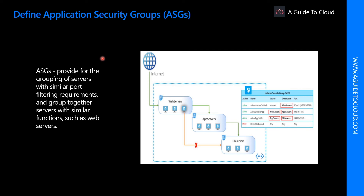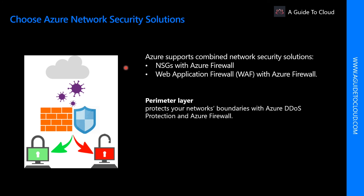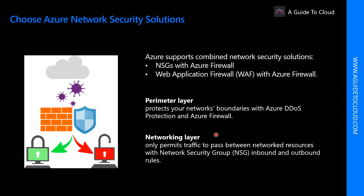When considering Azure's security solutions, consider all elements of defense in depth. At the perimeter layer, the focus is on protecting organizations from network-based attacks against your resources — identifying these attacks, alerting on them, and eliminating their impact. At the networking layer, the focus is on limiting network connectivity across all your resources to only allow what is required. Segment your resources and use network-level controls to restrict communication to only what is needed, reducing the risk of lateral movement throughout your network.